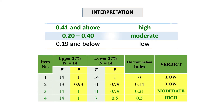Use the given interpretation table to make sense of the Discrimination Index values. For both criterion-referenced and norm-referenced tests, the Discrimination Index of an item should be at least 0.20 to effectively distinguish between test takers who knew the item from those who did not. If you obtain a Discrimination Index of 0.19 and below, the item is low. If it ranges from 0.20 to 0.40, the item is moderate or average. If it ranges from 0.41 and above, the item is high.